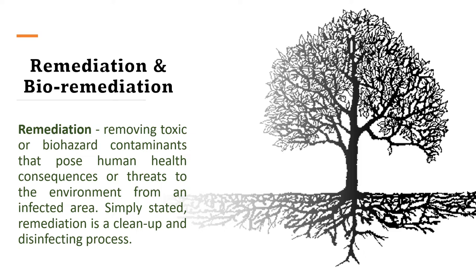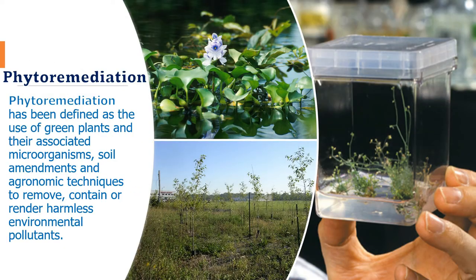Phytoremediation is just one part of remediation in which we use plants instead of other available microbes or biological material. It is a plant-based approach which involves the use of plants to extract and remove elemental pollutants, or lower their bioavailability in soil, water, or air. Plants have the ability to absorb ionic compounds in the soil and water, even at low concentration, through their root systems.